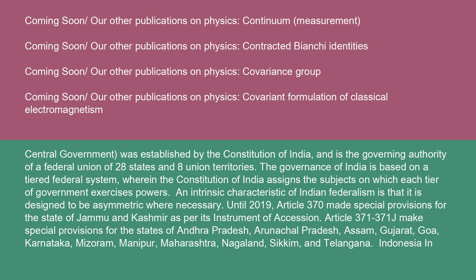Articles 371 to 371J make special provisions for the states of Andhra Pradesh, Arunachal Pradesh, Assam, Gujarat, Goa, Karnataka, Mizoram, Manipur, Maharashtra, Nagaland, Sikkim, and Telangana.